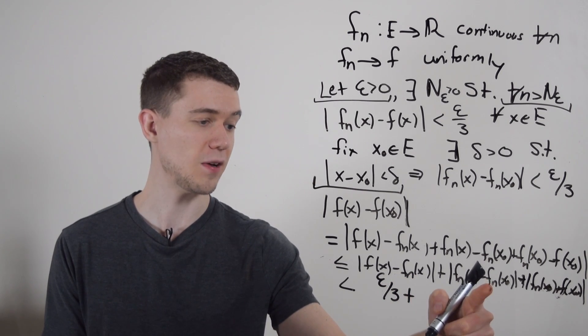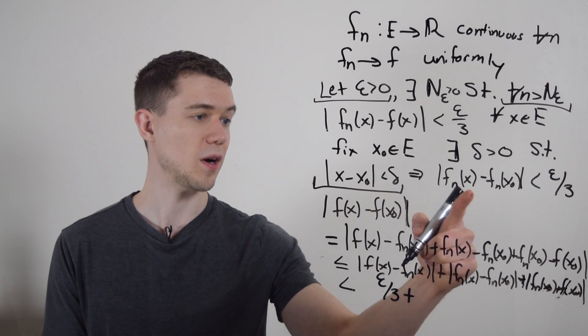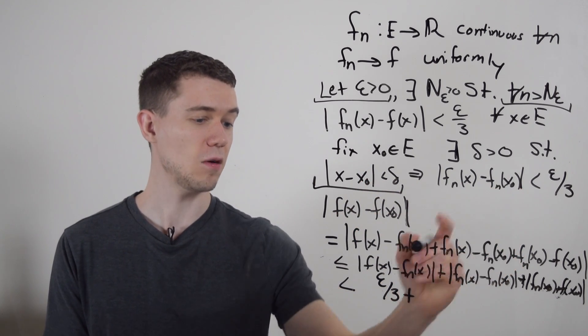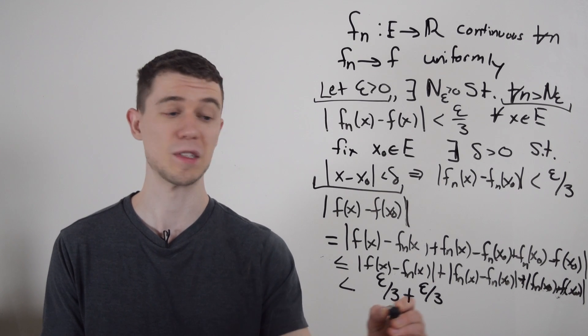This piece here, f sub n of x minus f sub n of x naught. Well, I have that right here. That was because each f sub n was continuous, I have that's less than epsilon over three.